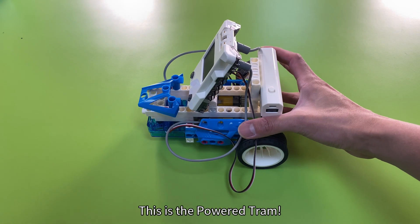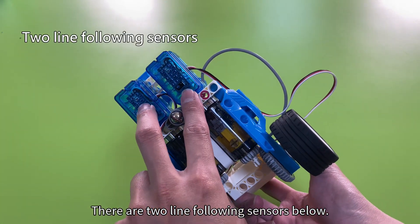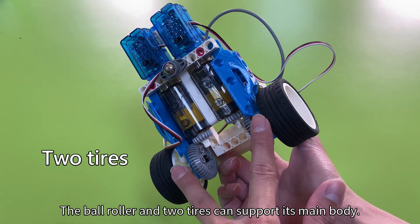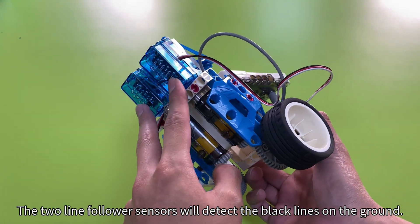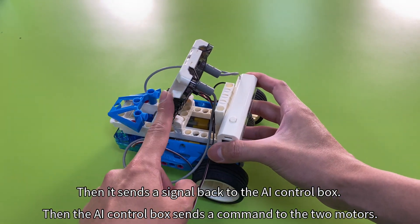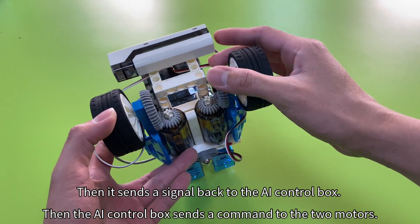This is the powered tram. There are two line following sensors below. The ball roller and two tires can support its main body. The two line follower sensors will detect the black lines on the ground, then send a signal back to the AI control box. Then the AI control box sends a command to the two motors.